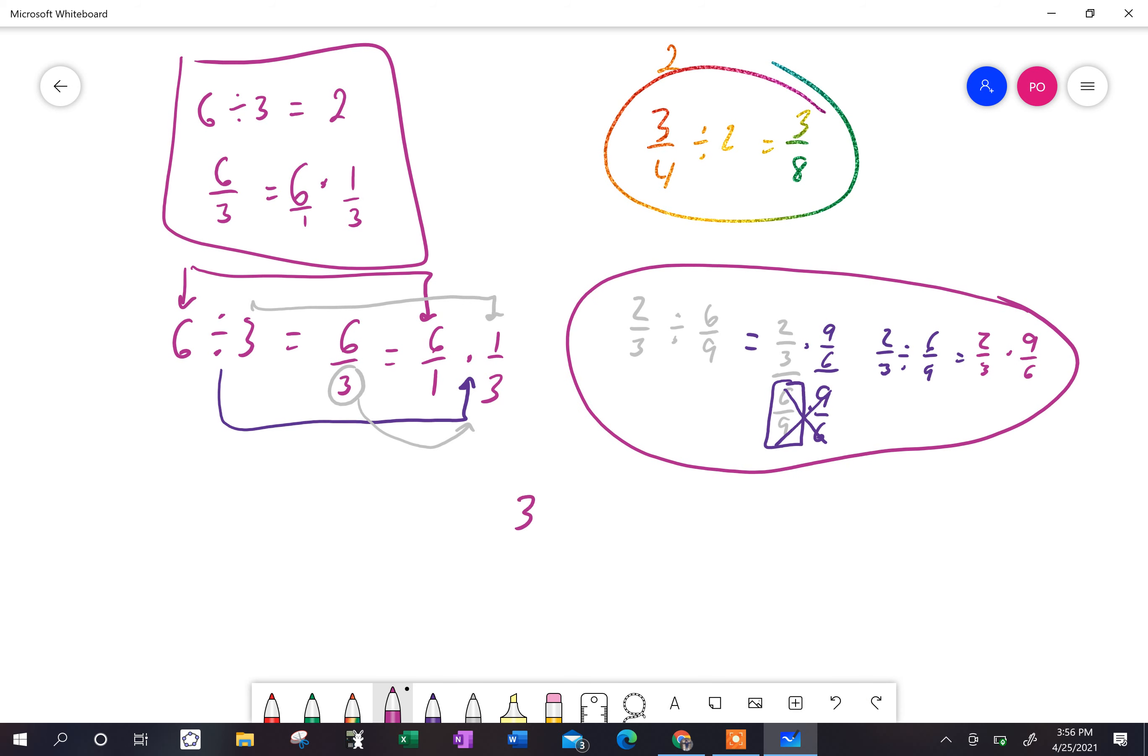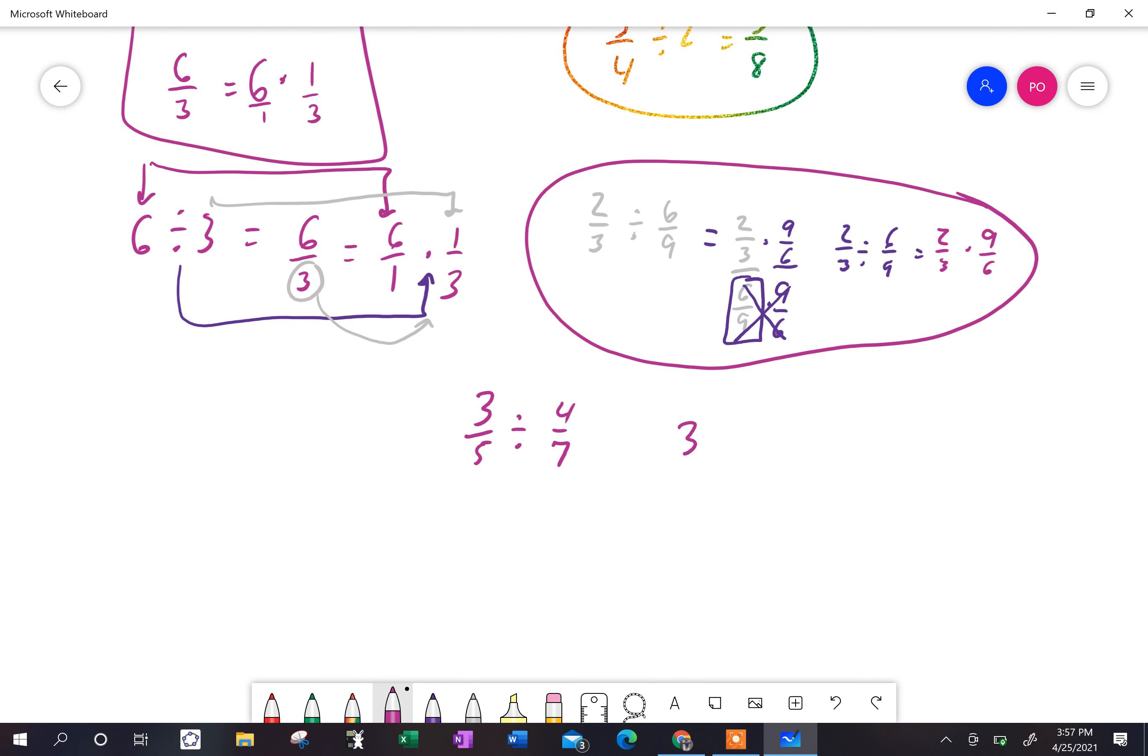If I have three over five divided by four over seven, I can rewrite that as a fraction divided by a fraction because remember, six divided by two is really just six over two. So that's all I did. I have a fraction over a fraction.